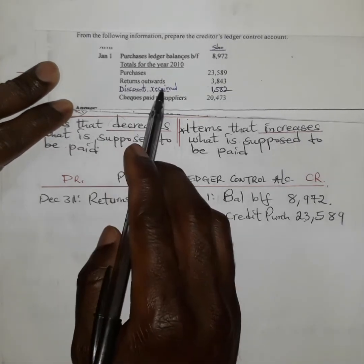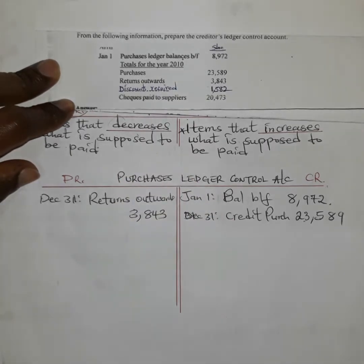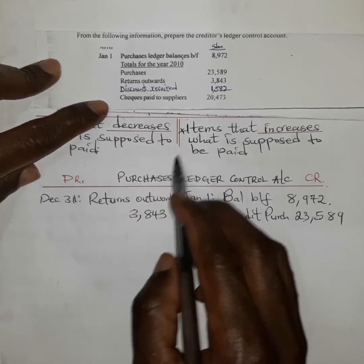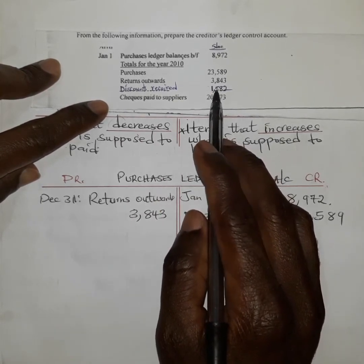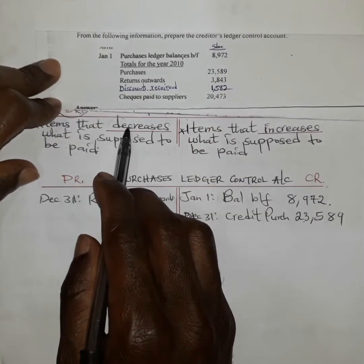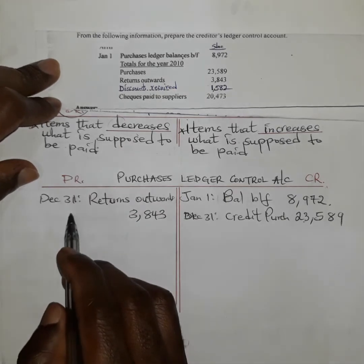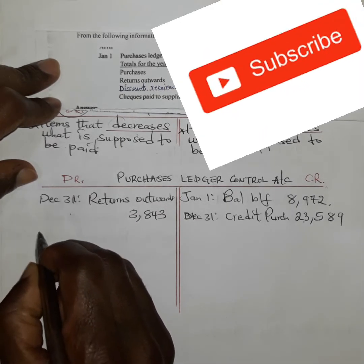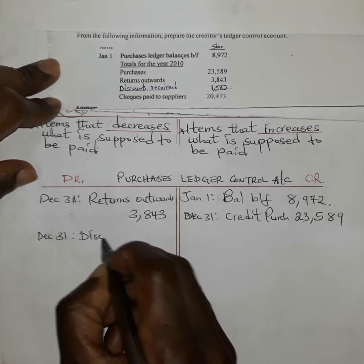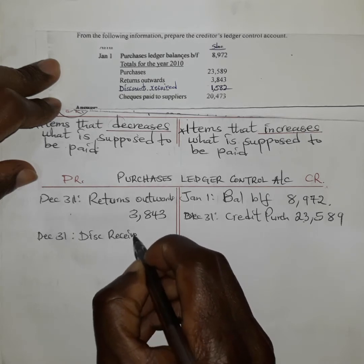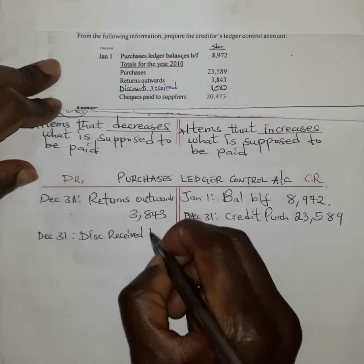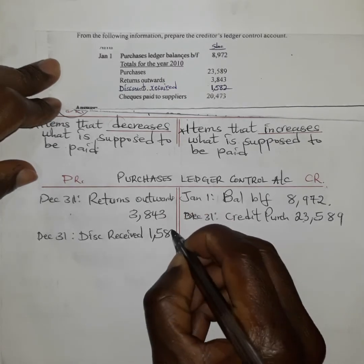Then we go to discount received. Discount received means this business was supposed to pay a higher amount but was asked to pay less. So it is reducing what they are supposed to pay and therefore it is debited. On December 31st, we record discount received and debit with an amount of 1,582.